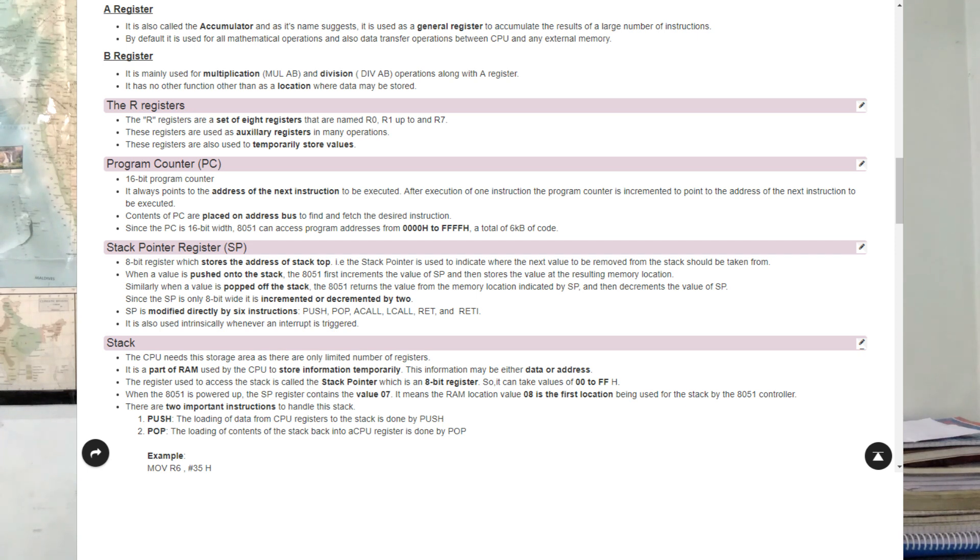Next, register PSW (program status word register) which is also 8-bit register. It indicates the status of the arithmetic and logical operations performed by your CPU. It consists of various flags such as carry flag, auxiliary carry flag, bits related with selection of the banks (RS1 and RS0), overflow flag and parity flag.